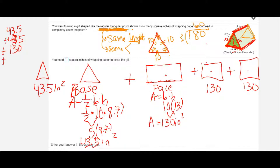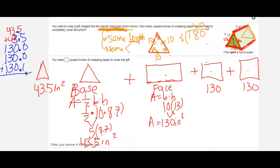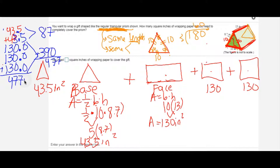I need to add all the face areas, aligning decimals carefully: 43.5 plus 43.5 for the two triangular bases, plus 130 plus 130 plus 130 for the three lateral faces. I can multiply 130 times 3 to get 390, and 43.5 times 2 to get 87. Adding 390 and 87 gives a surface area of 477 square inches.